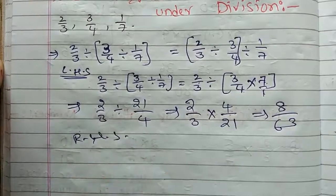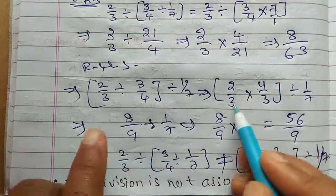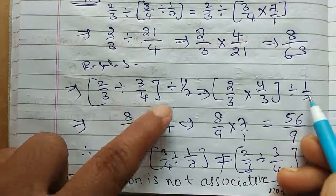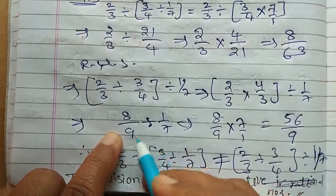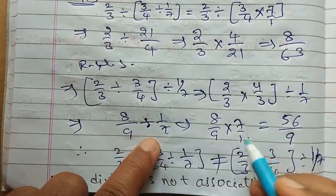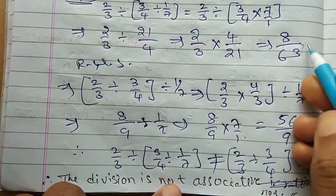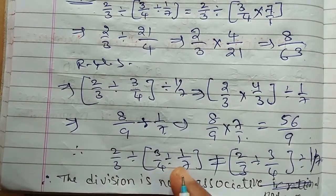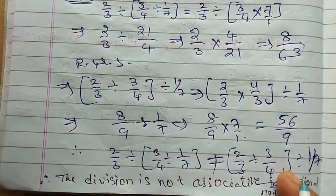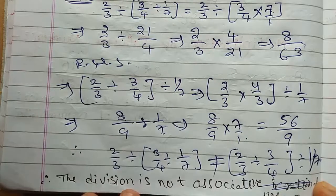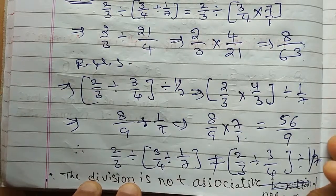Now RHS: 2/3 ÷ (3/4 ÷ 1/7). First, 2/3 ÷ 3/4: multiplicative inverse of 3/4 is 4/3, so 2/3 × 4/3 = 8/9. Then 8/9 ÷ 1/7: multiplicative inverse of 1/7 is 7, so 8/9 × 7 = 56/9. RHS = 56/9. LHS = 8/63 and RHS = 56/9, so they are not equal. Therefore division is not associative in rational numbers: A ÷ (B ÷ C) ≠ (A ÷ B) ÷ C.